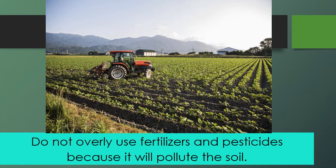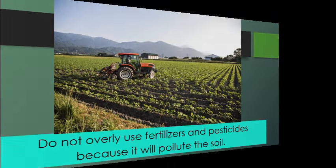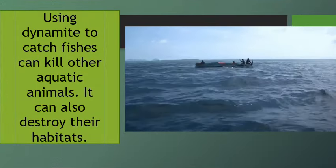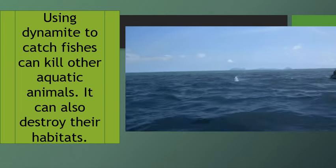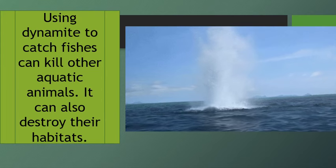However, applying an excessive amount of fertilizer leads to the release of harmful greenhouse gases into the atmosphere and the eutrophication of our water. Eutrophication is the excessive richness of nutrients in a lake or other body of water, frequently due to runoff from the land, which causes a dense growth of plant life and death of animal life from lack of oxygen. Using dynamite to catch fish can kill other aquatic animals and destroy their habitats.